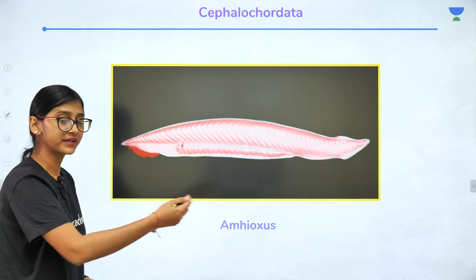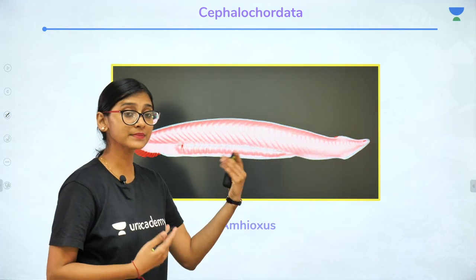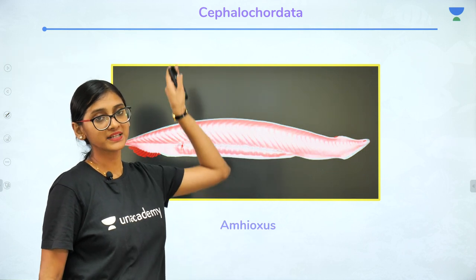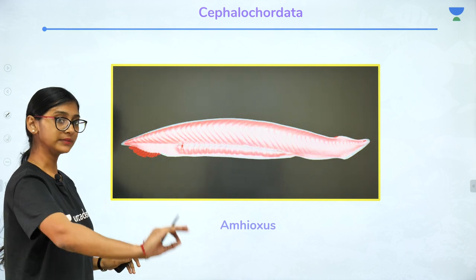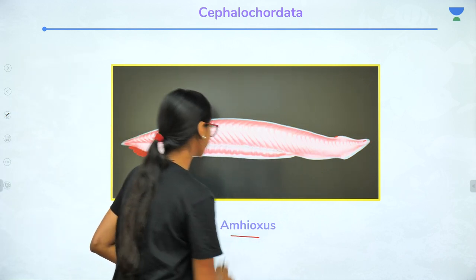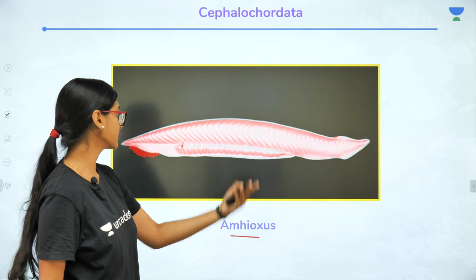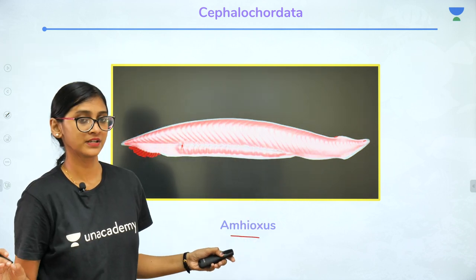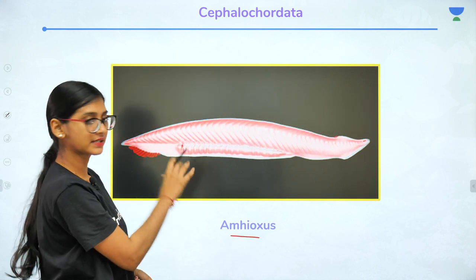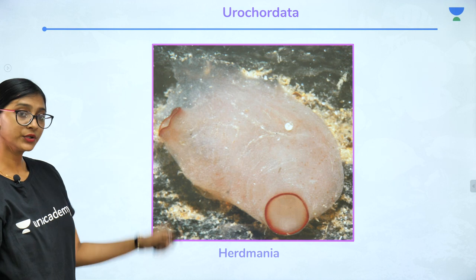Protochordata is divided into Cephalochordata and Urochordata. 'Cephalo' means head — in these organisms the notochord extends from the head and is present throughout their life cycle. The example is Amphioxus, and these are called fish-like organisms because they resemble fish with fins.